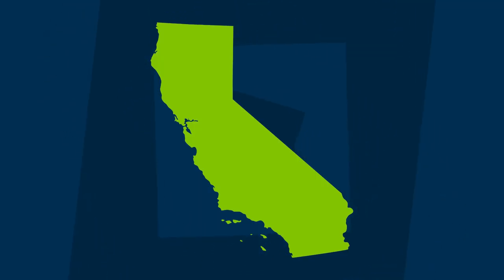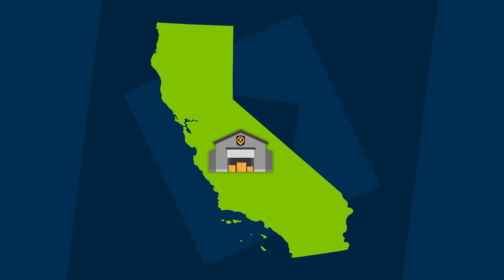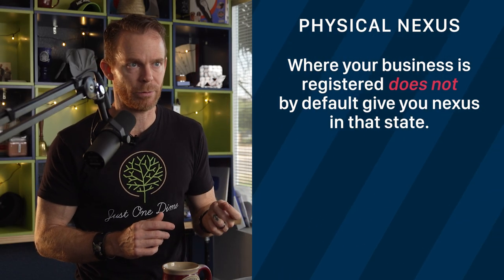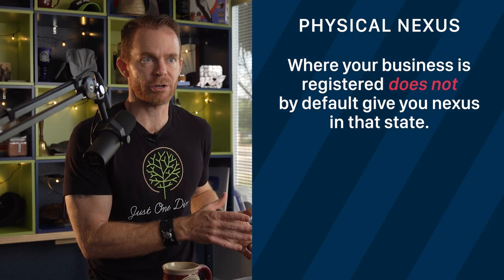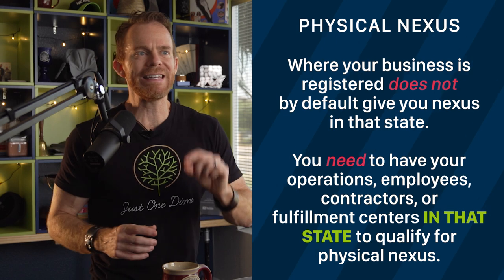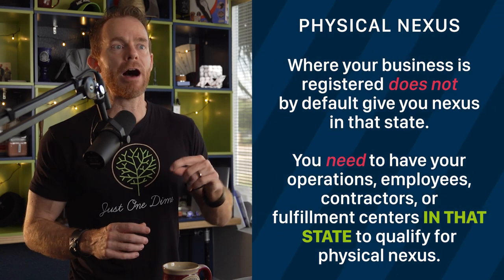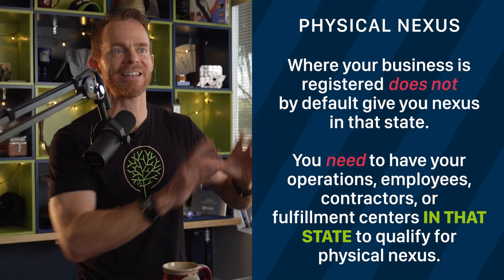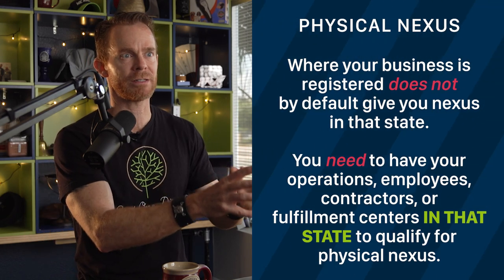What if your products are stored at an Amazon fulfillment center in California? Then you have physical nexus in the state of California. Keep in mind — if your company is registered in Delaware, for example, where your business is registered does not by default give you nexus in that state. You need to actually have operations, employees, contractors, or fulfillment centers in that state to qualify for physical nexus.